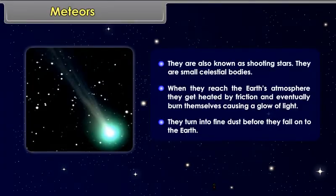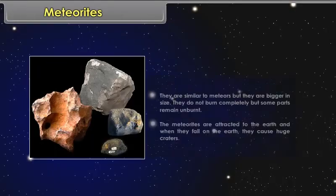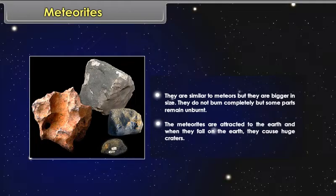Meteorites. They are similar to meteors, but they are bigger in size. They do not burn completely, but some parts remain unburnt. The meteorites are attracted to the Earth, and when they fall on the Earth, they cause huge craters.